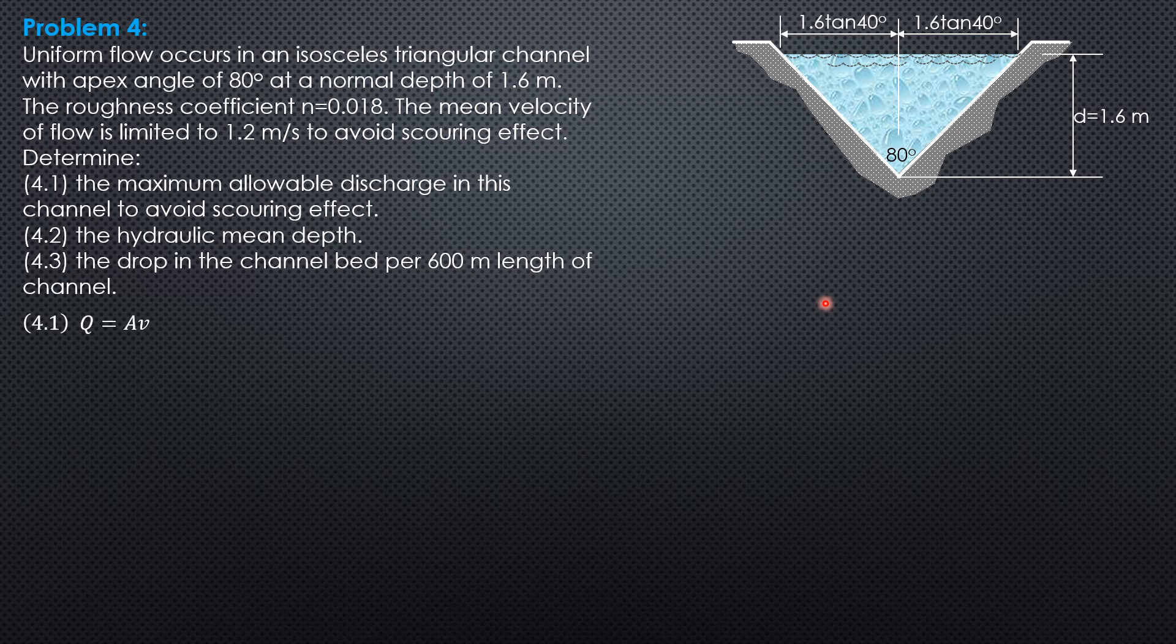So Q is area times mean velocity. The area is 1.6 tangent of 40 times 2, so 0.5 of 3.2 tangent 40 times 1.6. That's the top width, 3.2 tangent of 40 degrees, times depth of flow 1.6. Then mean velocity of flow is limited to 1.2, so we maximize 1.2 to prevent scouring effect. The maximum discharge is 2.578 cubic meter per second.